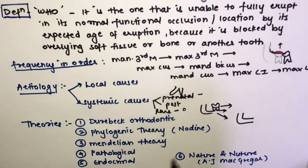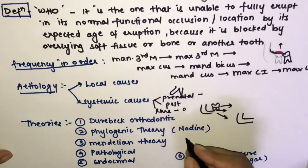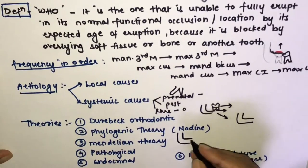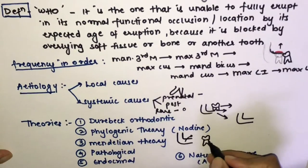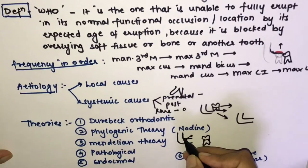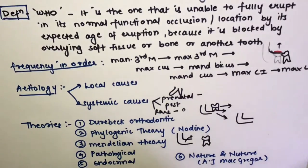The Mendelian theory is a genetic/hereditary theory: an individual receives a small jaw from one parent and larger teeth from the other parent, leading to impaction. If a child gets a smaller jaw size from one parent but larger tooth size from the other, impaction can result.